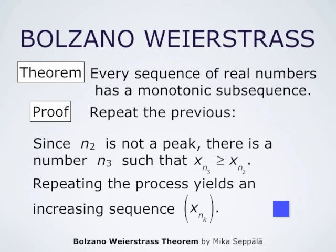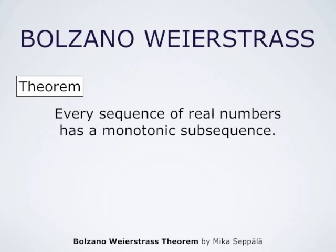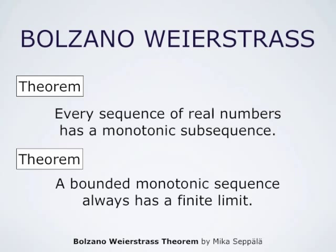In the case of infinitely many peaks, we found a decreasing subsequence, and in the case of finitely many peaks, we found an increasing subsequence. This means every sequence of real numbers has a monotonic subsequence. Together with the result that a bounded monotonic sequence always has a finite limit, this means that a bounded sequence always has a converging subsequence — a very important result.